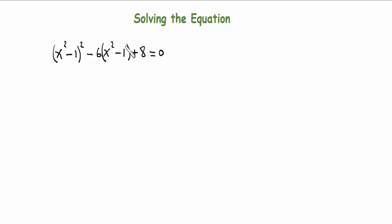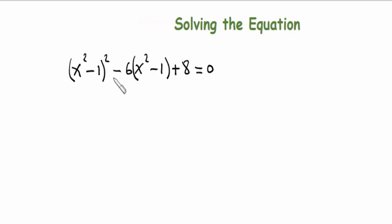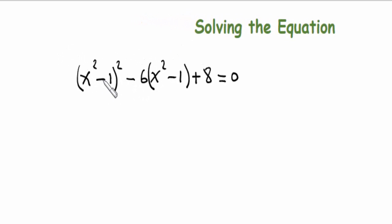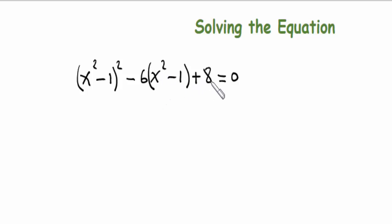In this video we want to solve this equation: (x² - 1)² minus 6x times (x² - 1) plus 8 equals zero.